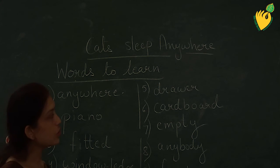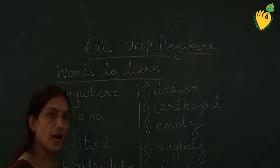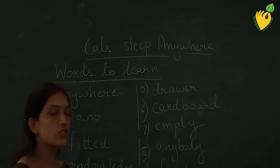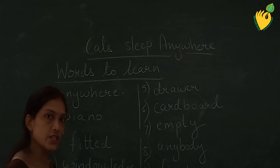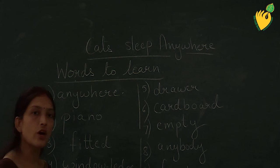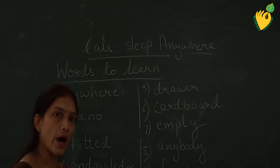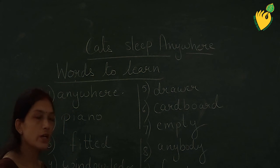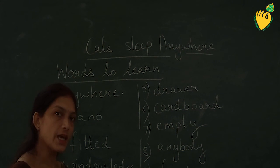Sixth: Cardboard — C-A-R-D-B-O-A-R-D. Seventh: Empty — E-M-P-T-Y. Eighth: Anybody — A-N-Y-B-O-D-Y. Ninth: Frogs — F-R-O-G-S.